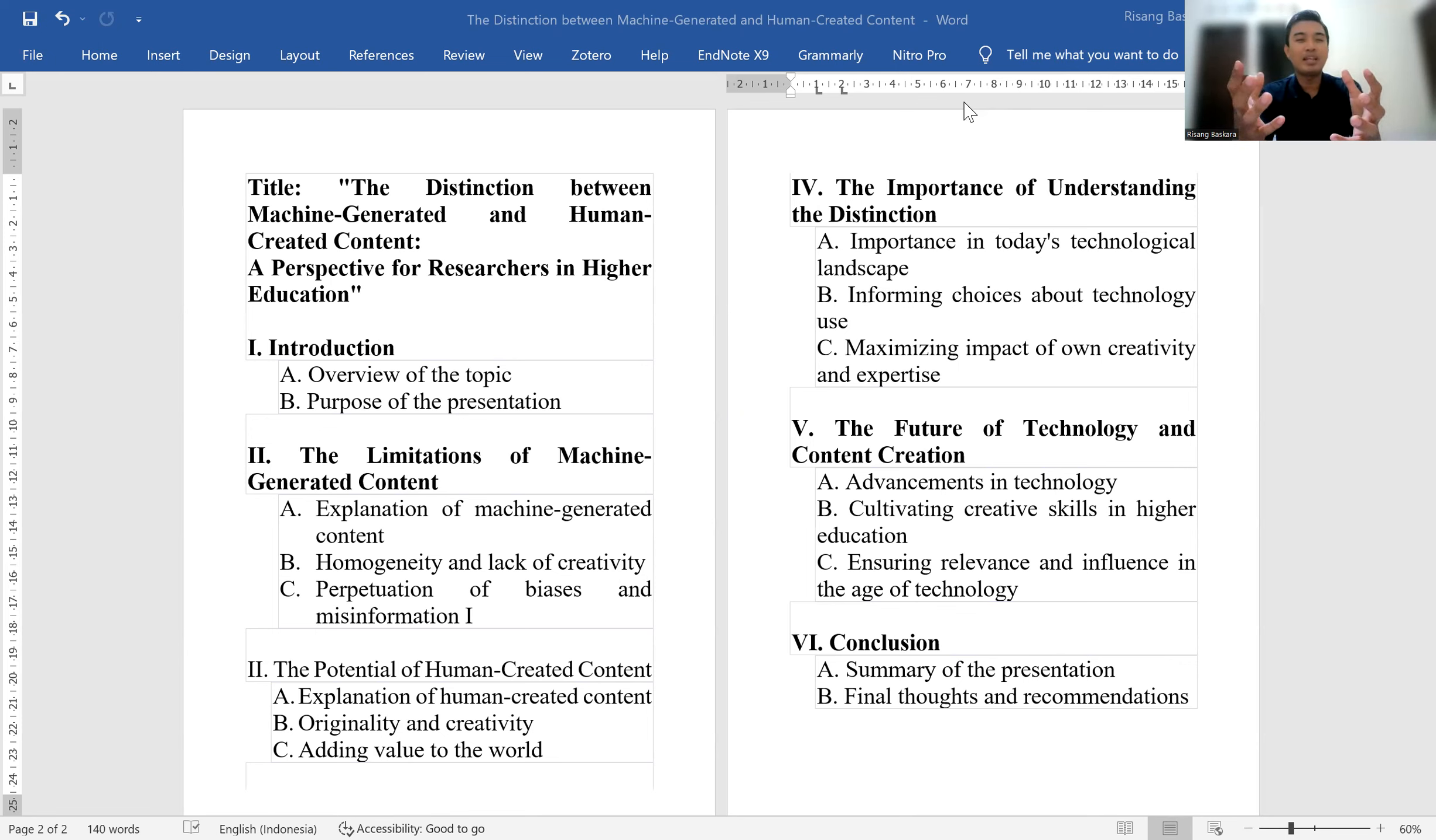In today's rapidly evolving technological landscape, it is important to understand the difference between machine-generated and human-created content. This understanding can inform our choices about how we employ technology in our research and teaching, and help us make more informed decisions about the content we produce and consume.